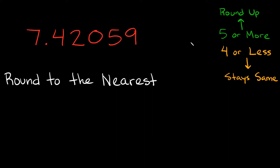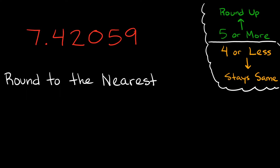The first thing I want to point out is a rule — I suggest writing it down if it's hard to remember. This rule tells us how rounding works, and I'll split it into two parts. If your number is five or more — so five, six, seven, eight, or nine — you're going to round up. If your number is four or less — so four, three, two, one, or zero — your number is going to stay the same.